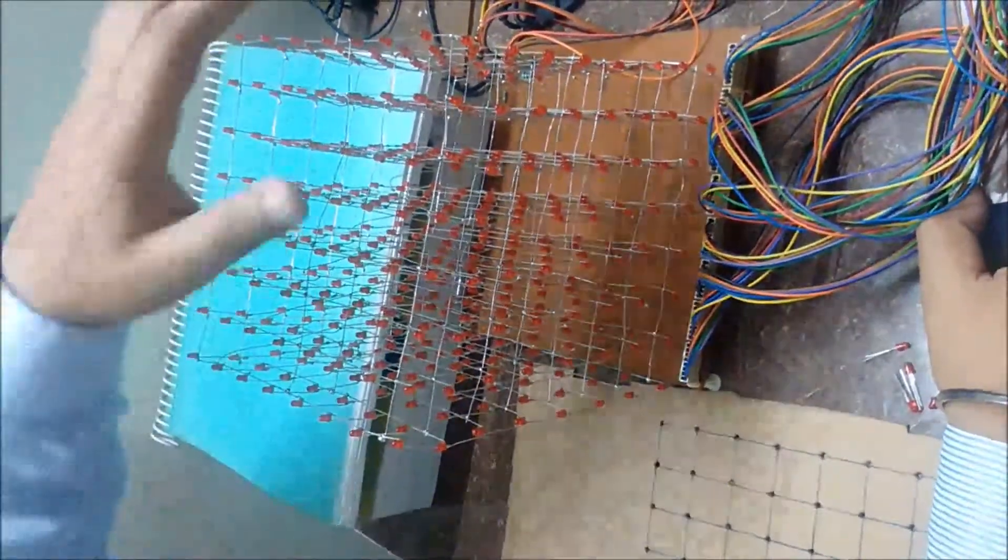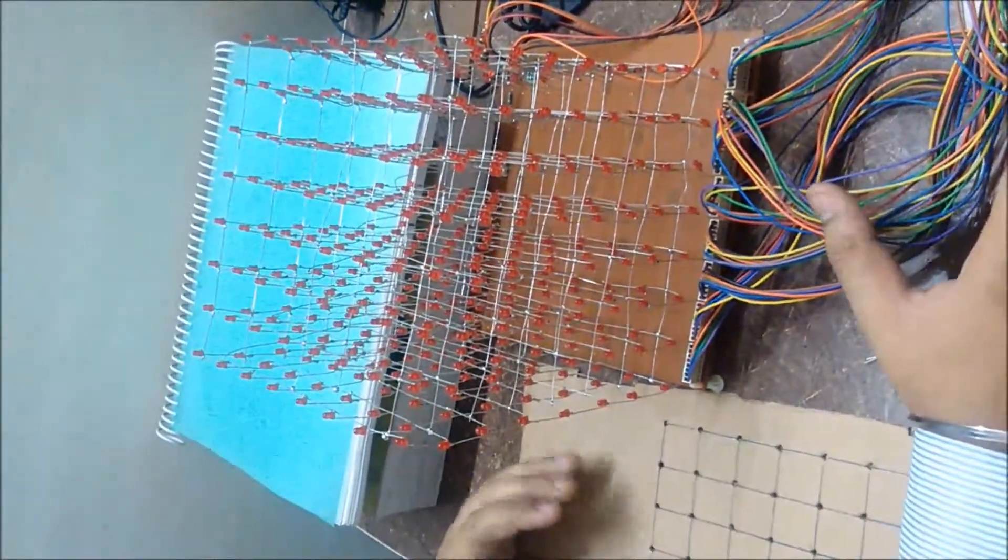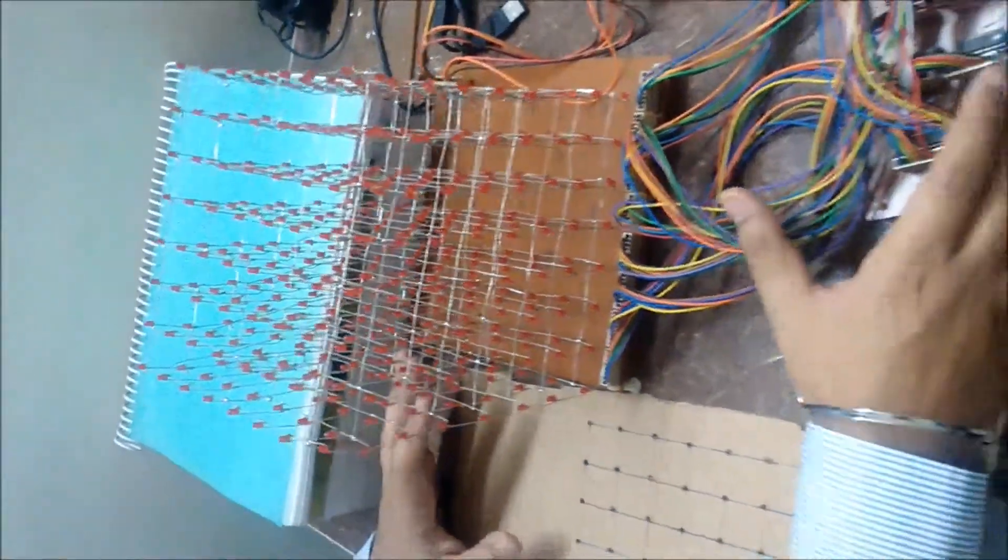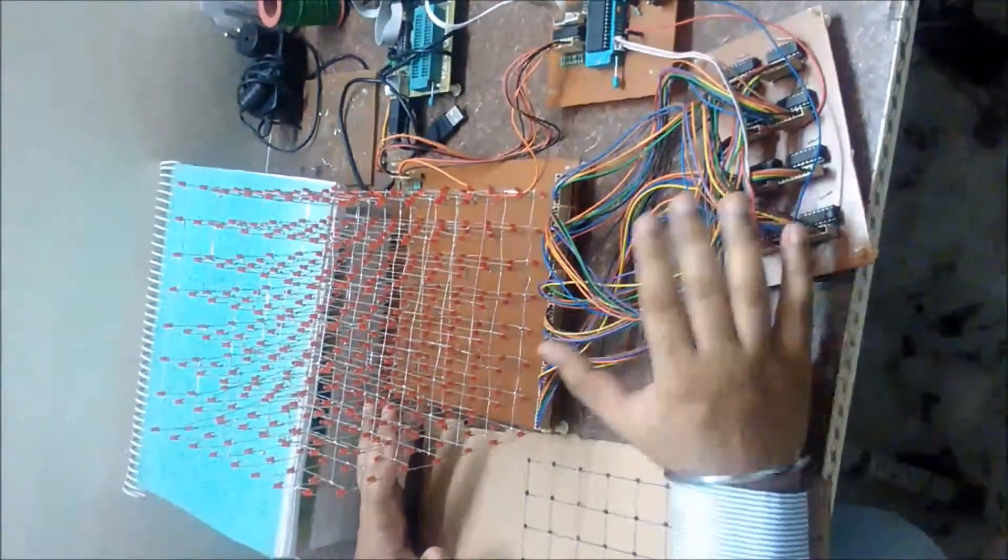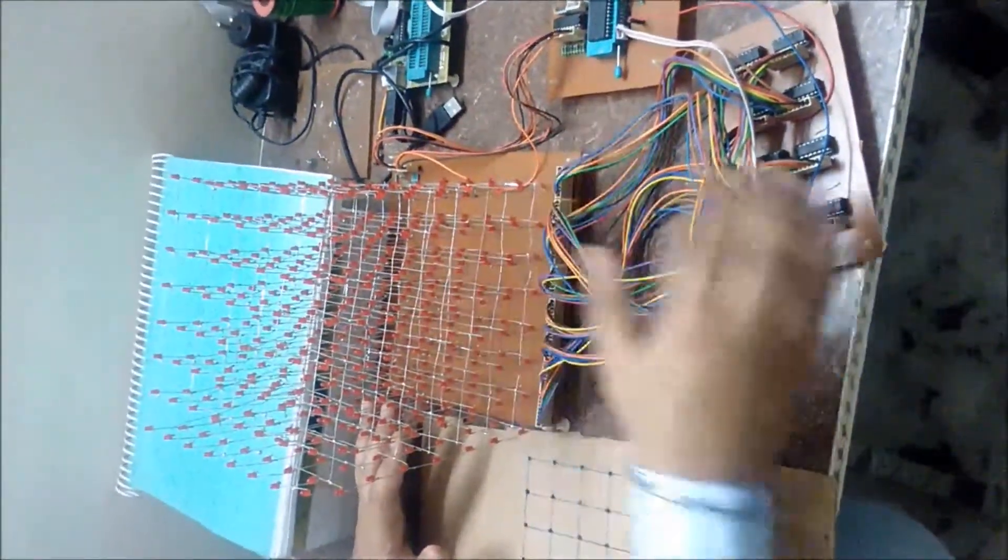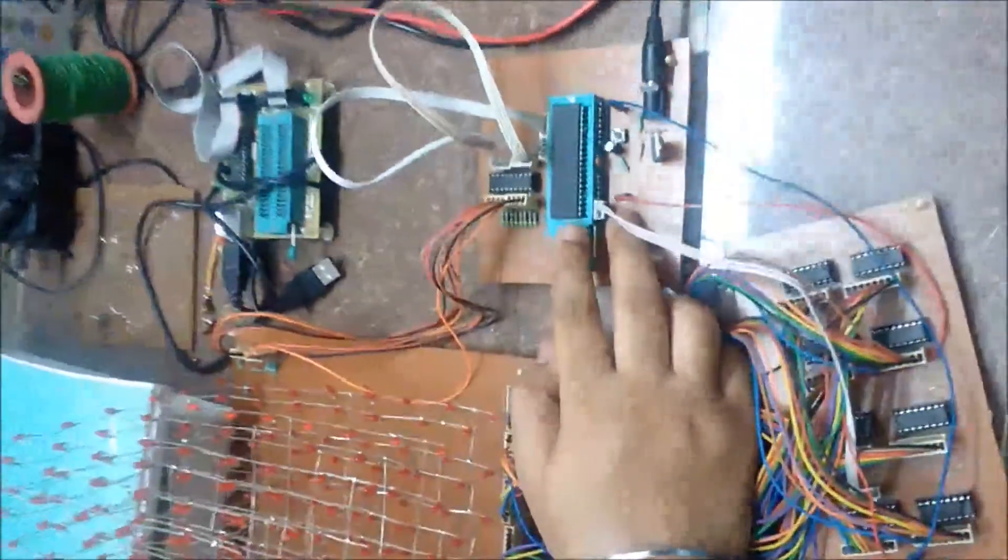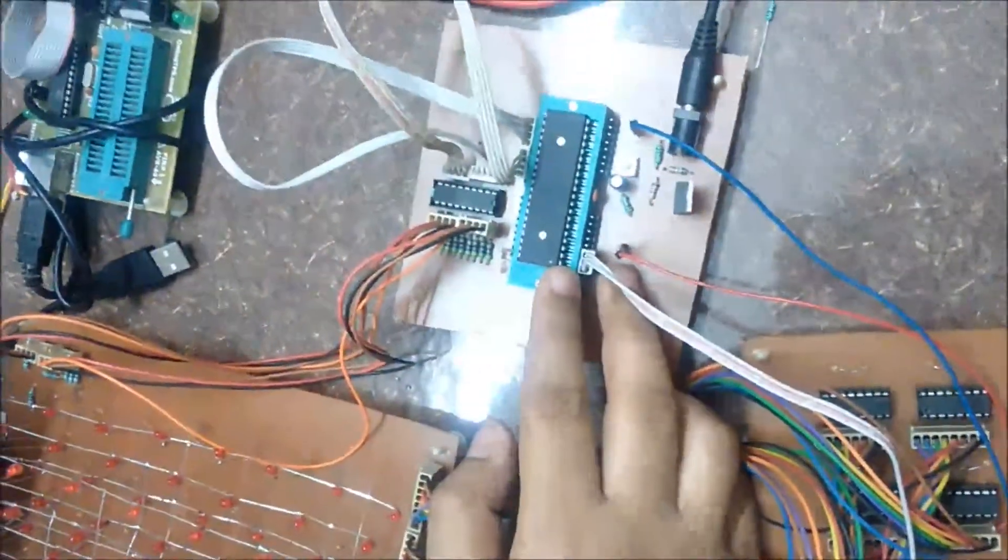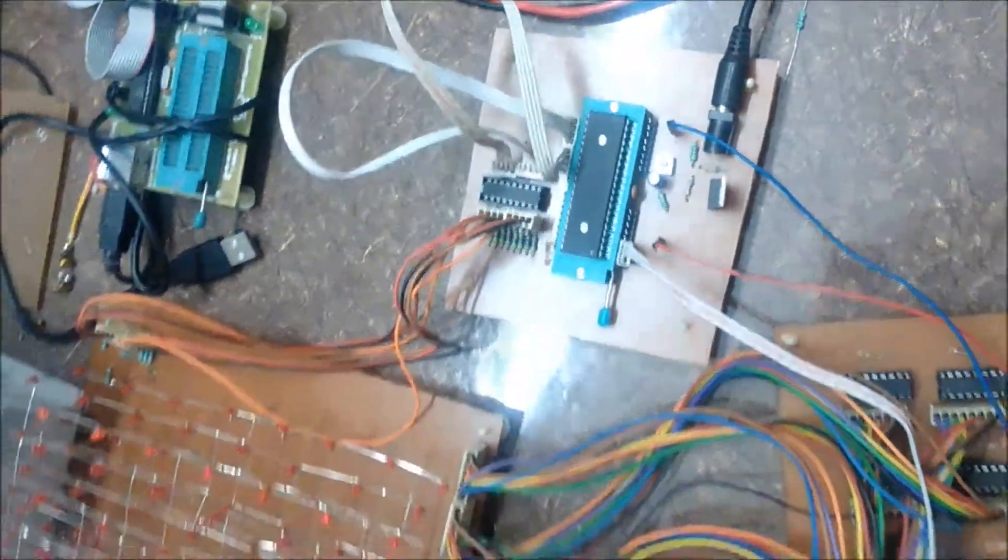The 8 rows are controlled by the microcontroller, and the 64 columns are controlled by the 74HC595 shift registers. These shift registers are also controlled by the microcontroller. I used an AVR ATmega32, a 40-pin microcontroller.